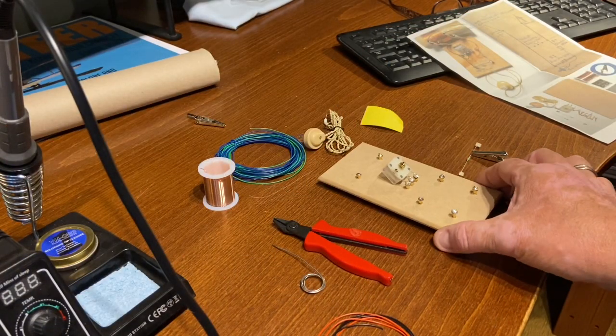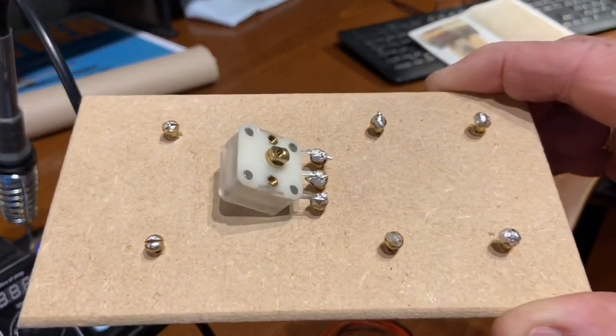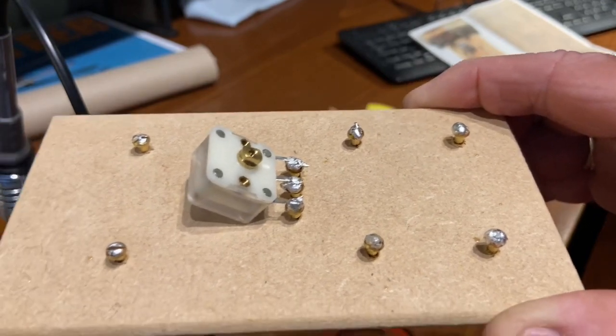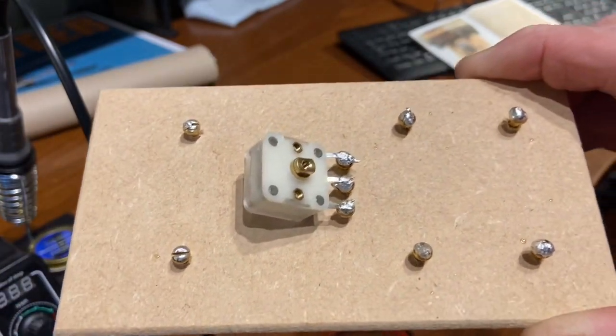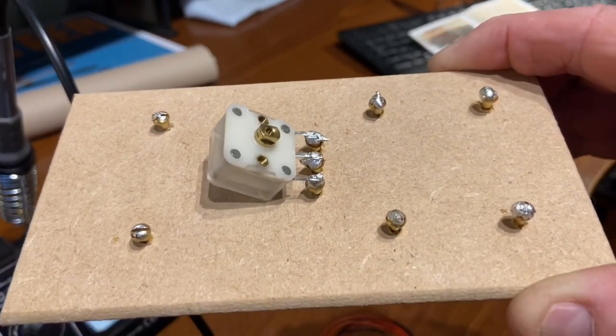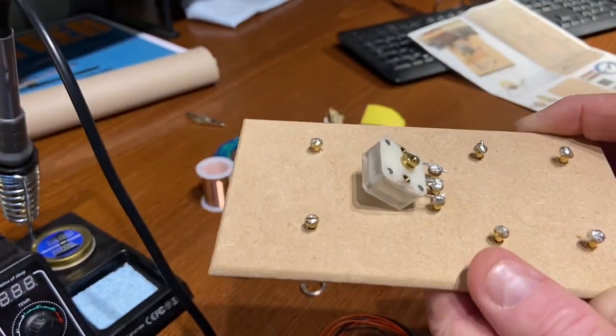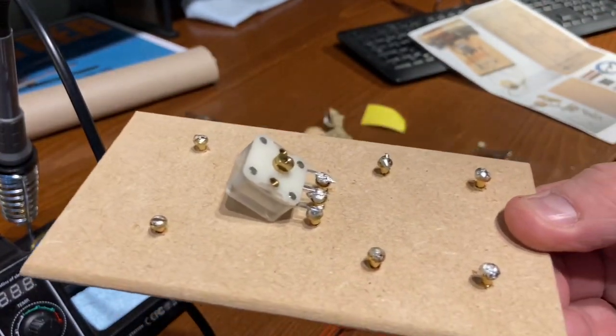So all of the screws have been tinned now, so there's solder on the head of every single screw. As you can see, I've soldered the capacitor, the variable capacitor, to the three screws here. So the next step will be to start soldering the components.